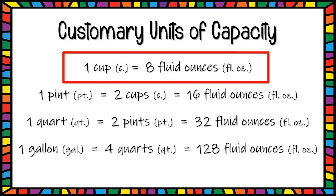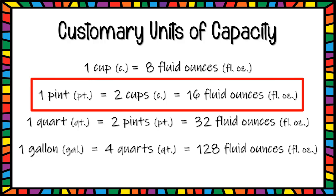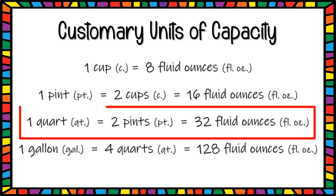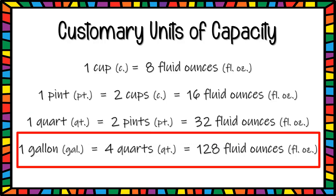One cup equals 8 fluid ounces. One pint equals 2 cups, which equals 16 fluid ounces. One quart equals 2 pints, which equals 32 fluid ounces. One gallon equals 4 quarts, which equals 128 fluid ounces.